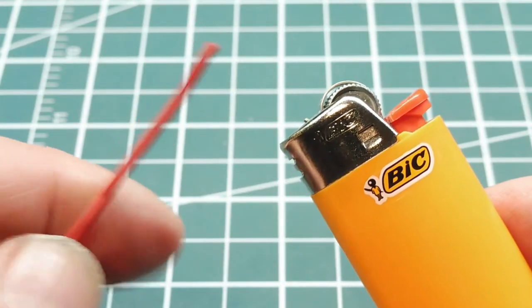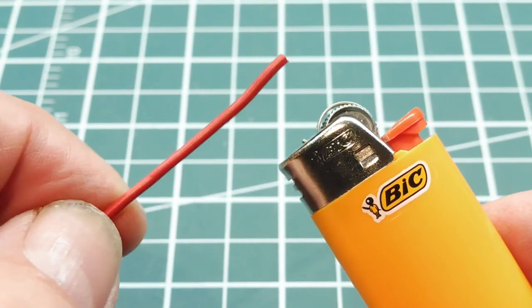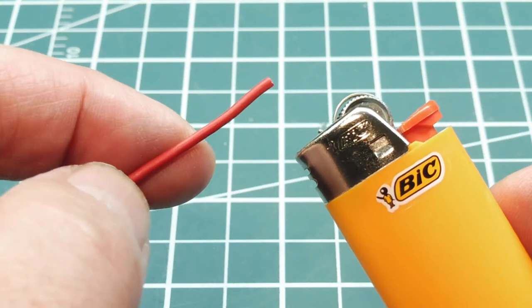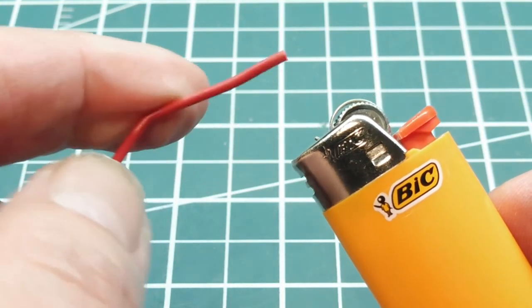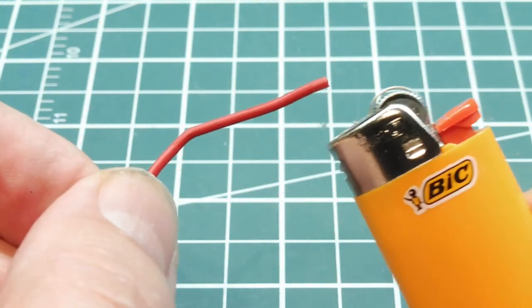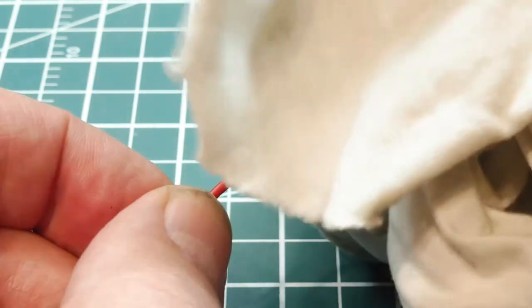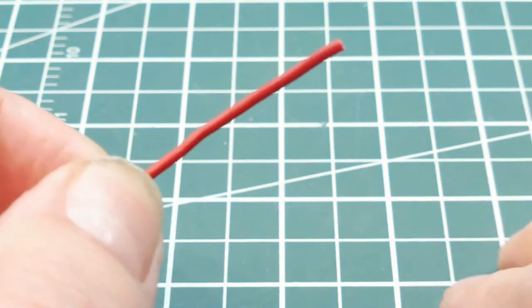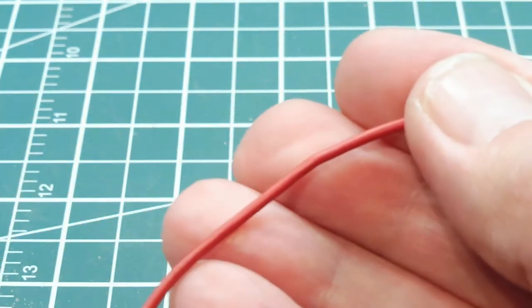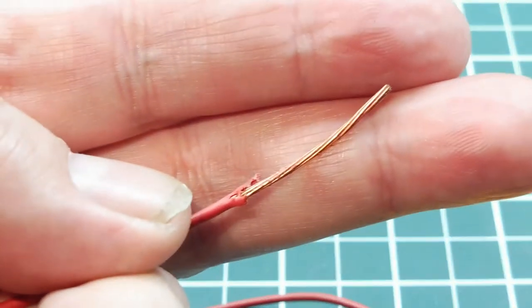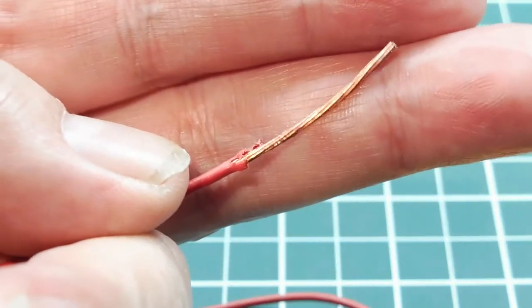Now if you need to strip a wire in an emergency situation and you don't have any stripping tools, you can use a lighter. You just put a small kink in your wire and you heat that part up until it just starts to melt and burn. Then get a cloth, and while it's still hot, just grab it and pull and it will pull the insulation off.